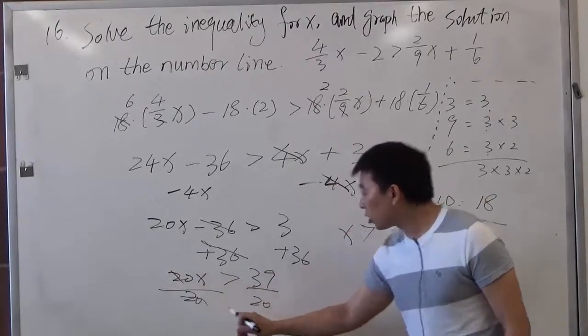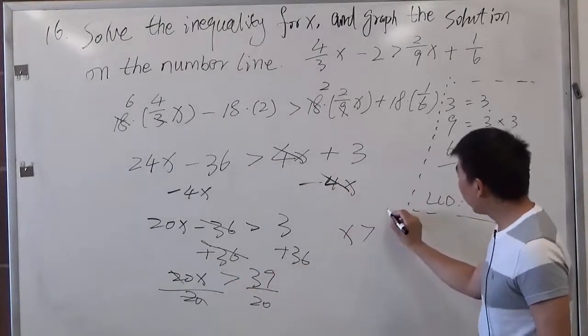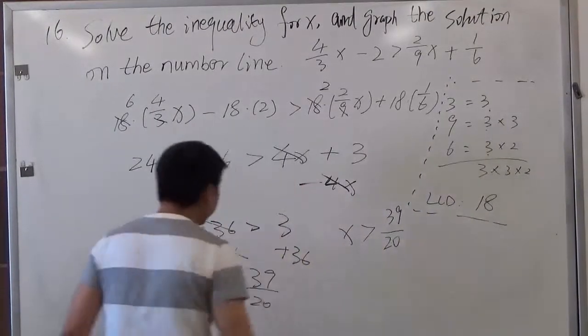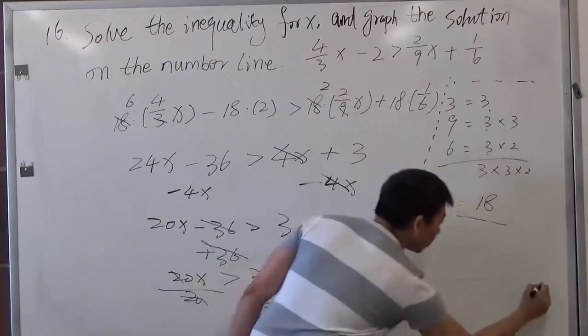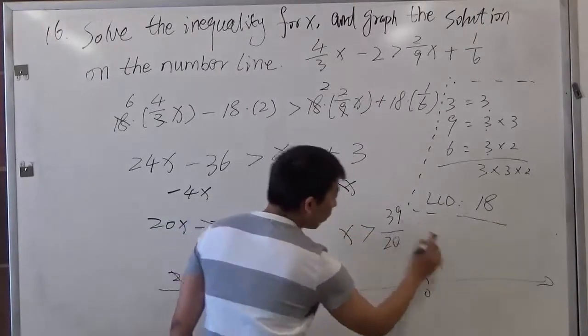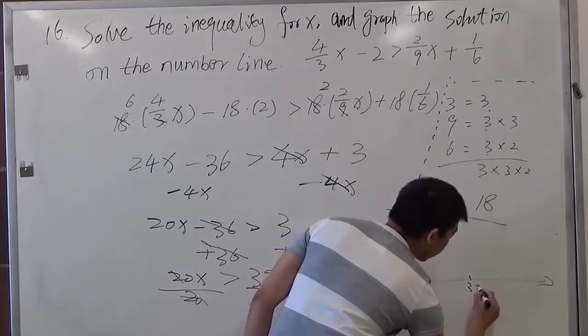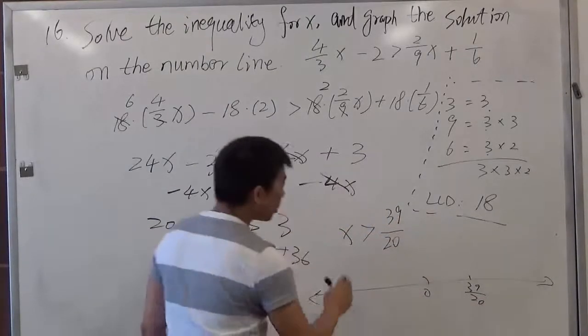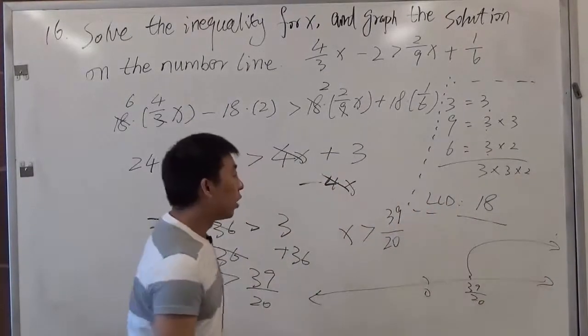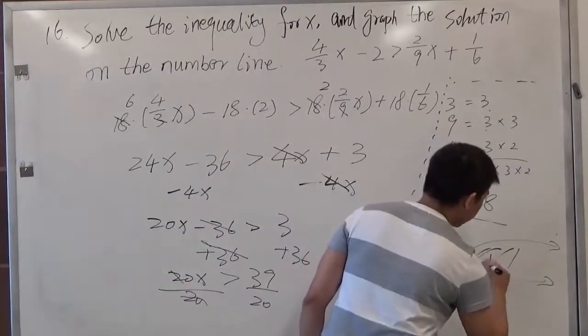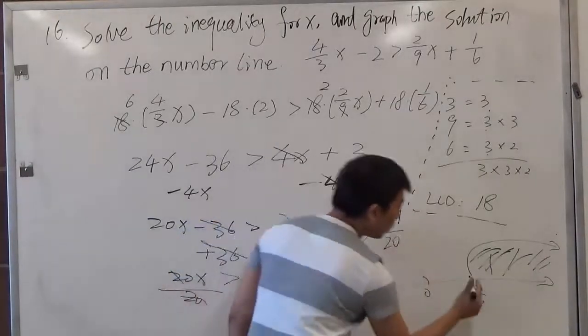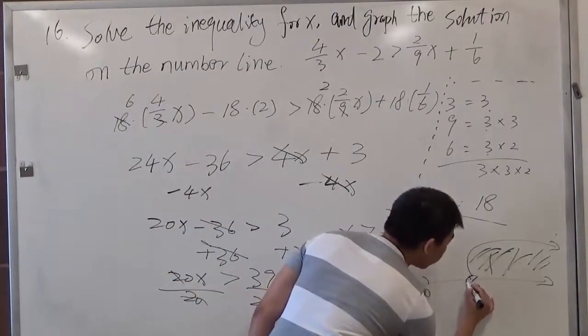So if we want to graph on the number line, here's 0, then we'll have 39 over 20. It's greater than, so it should go to the right side, right direction. Then the whole part is this. But it does not include the number 39 over 20, so it should be an empty circle.